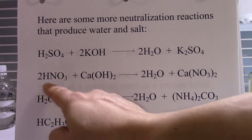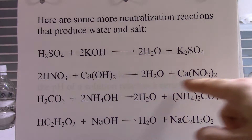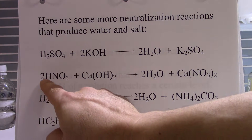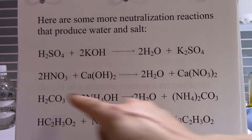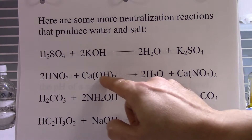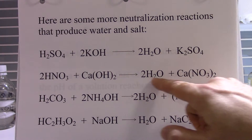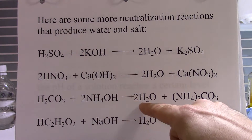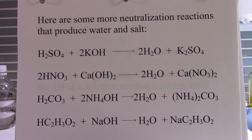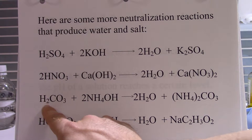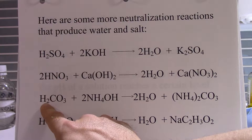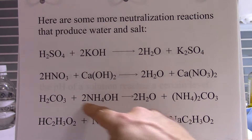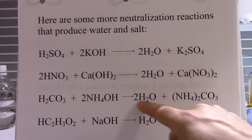Next, nitric acid and calcium hydroxide form water and calcium nitrate salts. Two hydrogen ions from the nitric acid combine with two hydroxides to form two water molecules. Then carbonic acid and ammonium hydroxide form water and ammonium carbonate salts. Two hydrogen ions from H2CO3 combine with two hydroxides to form two water molecules.